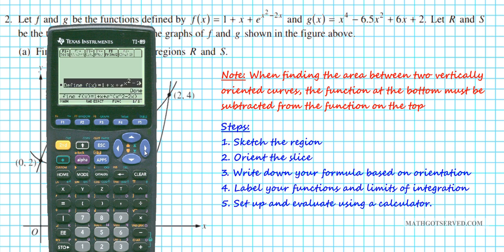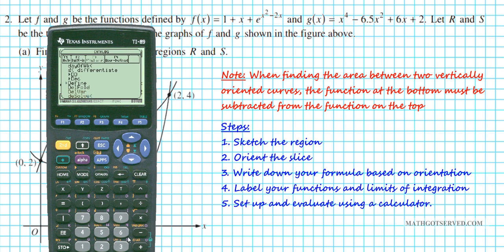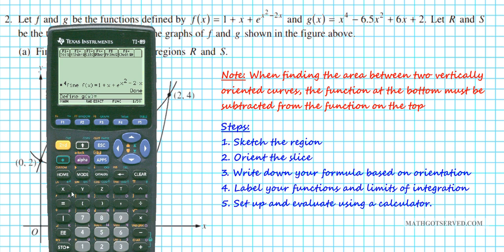Let's make sure we entered it correctly: f of x is 1 plus x plus e to the x squared minus 2x. Now, next we're going to define g of x. Define g of x as x to the fourth minus 6.5x squared plus 6x plus 2. Press enter and let's verify: x to the fourth minus 6.5x squared plus 6x plus 2. Excellent.